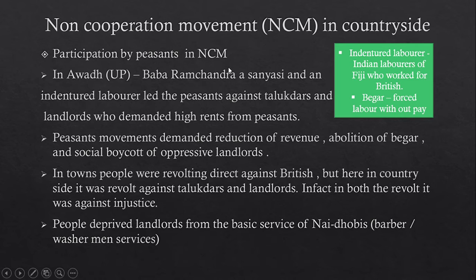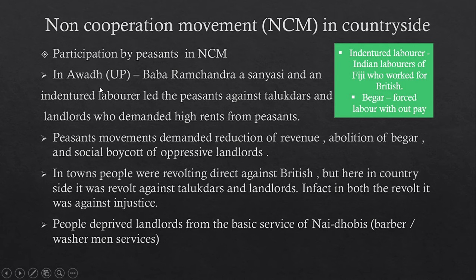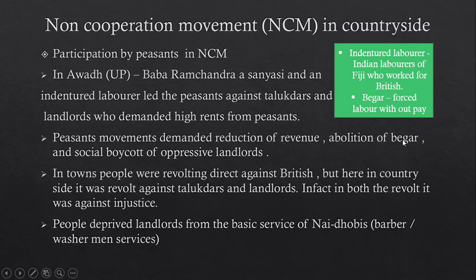Baba Ramchandra was a Fijian who came back to India and included himself in the non-cooperation movement in Awadh. He led the peasants against talukdars and landlords who demanded high rent. The peasant movement demanded reduction of revenue and abolition of beggar — that is, forced labor without pay.